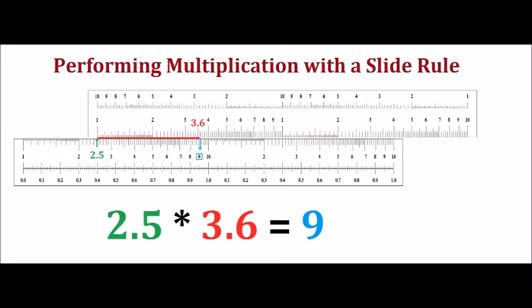How about 2.5 times 3.6? This time we align the 1 on the top scale with 2.5 on the bottom scale, that is in green. Move rightward to 3.6 as seen in red.